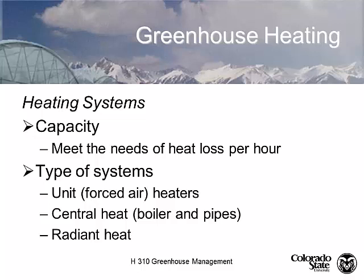We need to design our heating systems so that the capacity meets the demands of heat loss per unit time — per hour. To maintain temperature, we use three kinds of systems: unit heaters, which are typically forced air; central heating systems, which typically require a boiler and pipe system; and radiant heat.